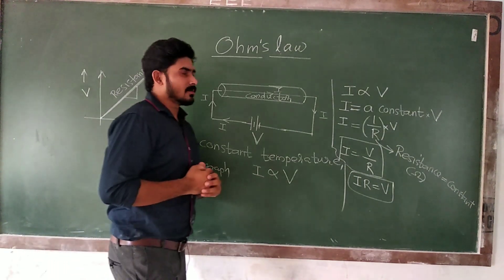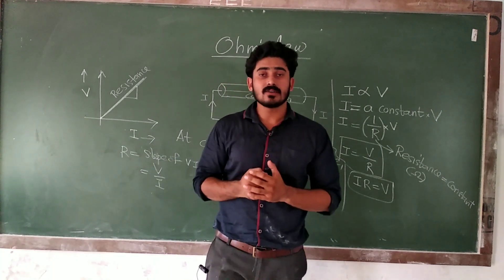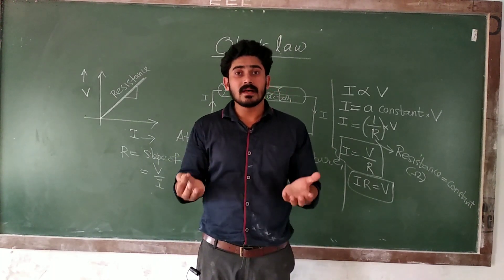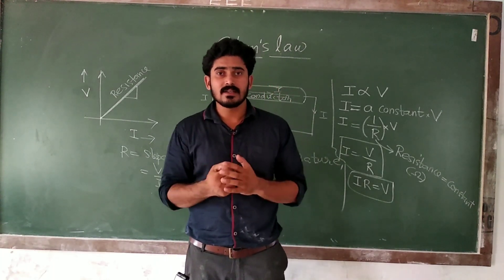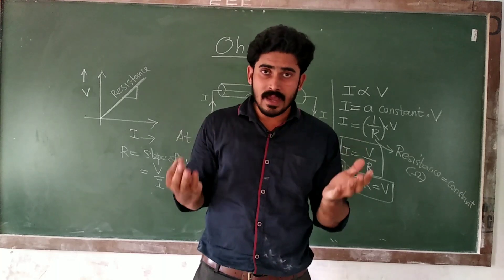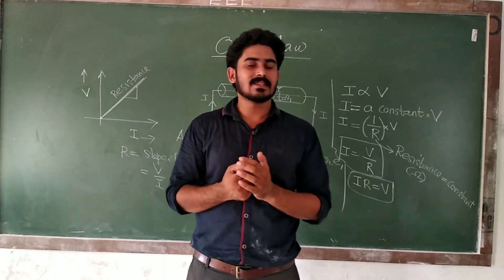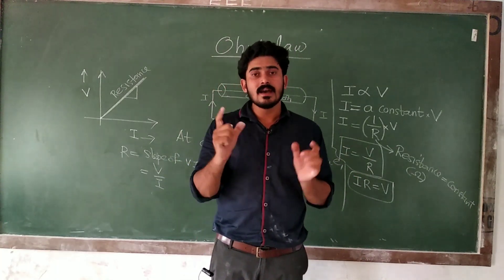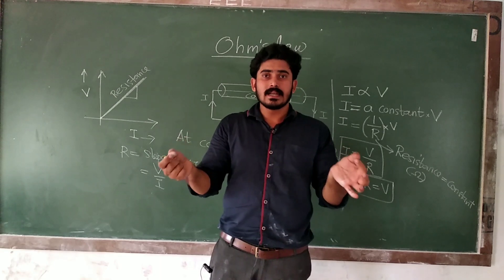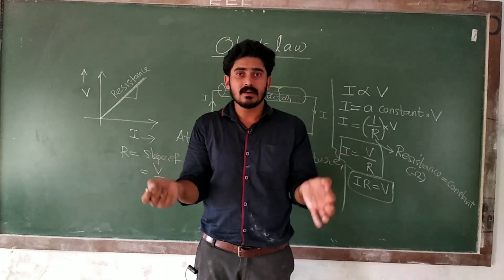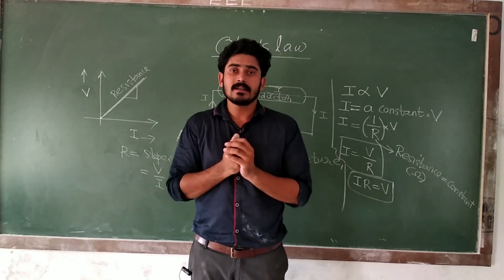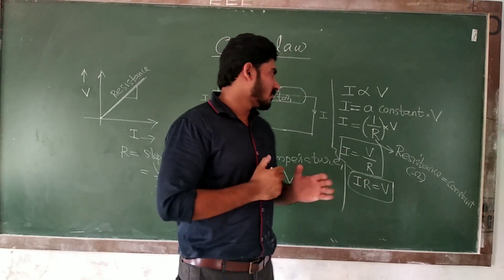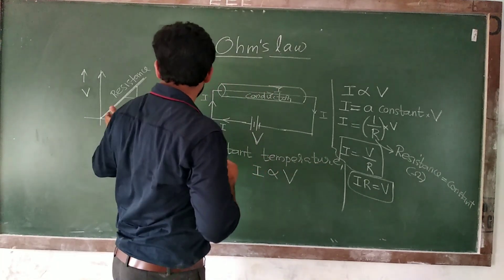This is Ohm's Law. At constant temperature, the current passing through a conductor is directly proportional to the voltage applied across the conductor. One conductor is connected and directly proportional at constant temperature. The graph is going to be a straight line through the origin.